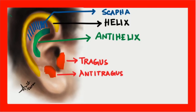Now, between the tragus and anti-tragus, we have another space. This flat surface over here between tragus and anti-tragus — this region is known as the concha.